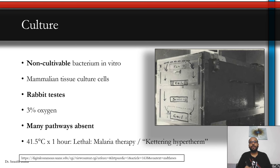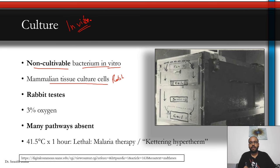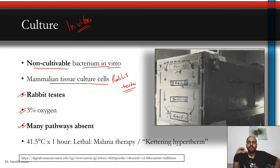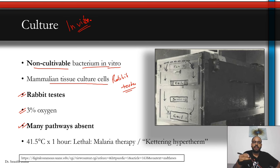As noted, this organism is not grown in culture — you require mammalian cell lines, so in vitro culture is not possible. It is non-cultivable outside the human body. We use rabbit testes — similar to how armadillo foot pads are used for leprosy. The spirochete requires oxygen to grow, and many metabolic pathways are absent, making it very dependent on mammalian cells. Syphilis spirochetes die when exposed to 41.5°C for about one hour. That is why historically malaria therapy was used — patients were deliberately given falciparum malaria so the fever would kill syphilis — and also the cabinet hypertherm, a heated room that raised body temperature to kill spirochetes.